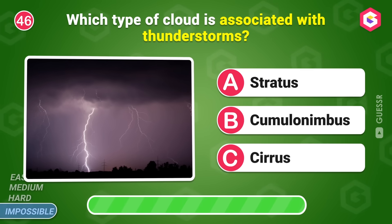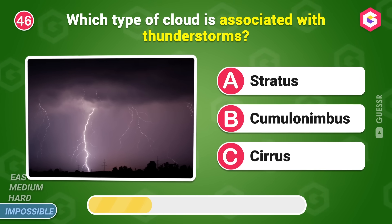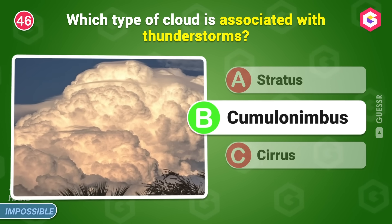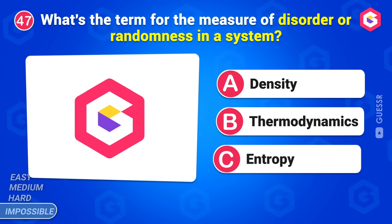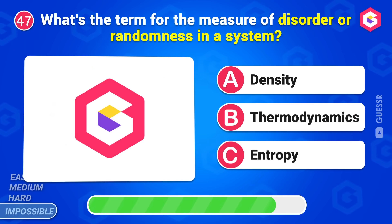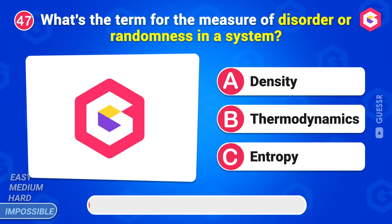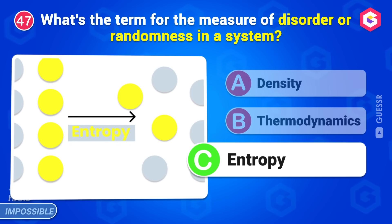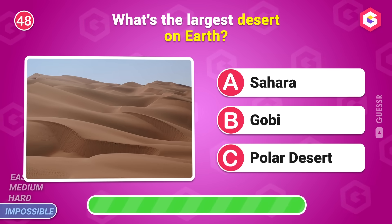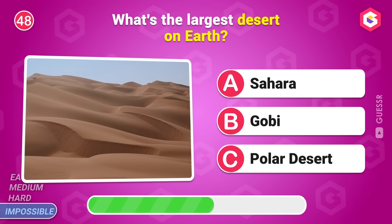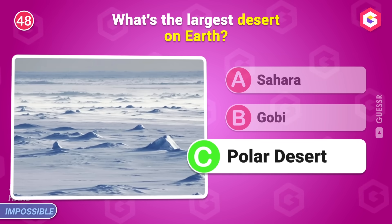Which type of cloud is associated with thunderstorms? Cumulonimbus. What's the term for the measure of disorder or randomness in a system? Entropy. What's the largest desert on Earth? Polar desert.